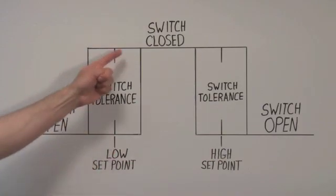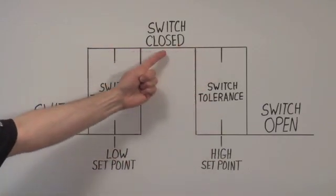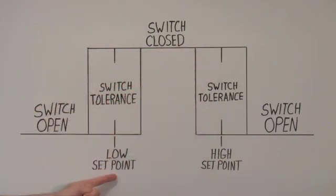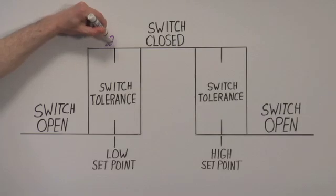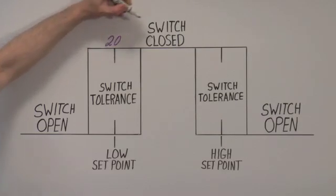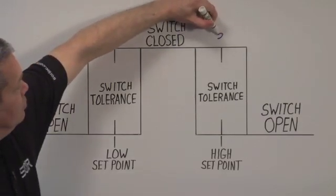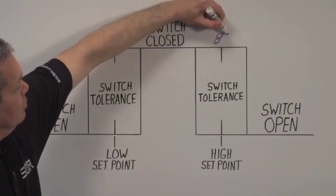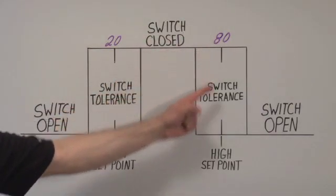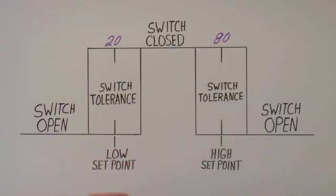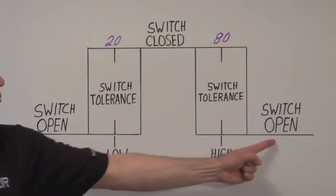On the other hand, the switch is on or closed when the process pressure varies between the low and high set points. This window could be set for an acceptable operating range of 20 PSI to 80 PSI. In this case, the switch will be closed when the pressure being monitored is between 20 and 80 PSI. If the pressure goes below 20 PSI or above 80 PSI, the switch will open.